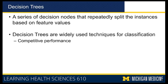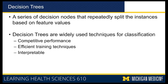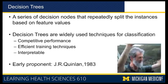Decision trees are widely used approaches for classification because they give competitive performance, they have very efficient training approaches, and they produce interpretable models. In fact, these have been in research or in use since 1983, so they are time-tested models that continue to perform very well.